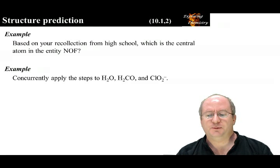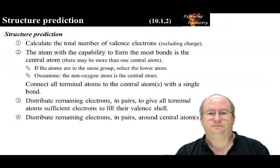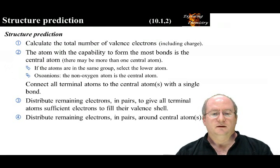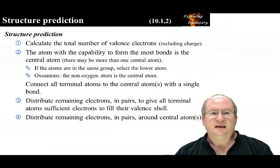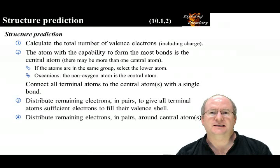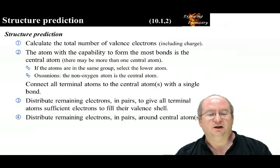After we go through the steps for predicting structures, we will apply them to these entities. Here are the steps to determining the 3D structure. The first step is to calculate the total number of valence electrons, including charge. The second step is that the atom with the capability to form the most bonds is the central atom. In larger entities, there may be more than one central atom. If the atoms are in the same group, select the lower atom. We saw this earlier with the SO3 example — both sulfur and oxygen are in the same group, and sulfur was selected as the central atom.